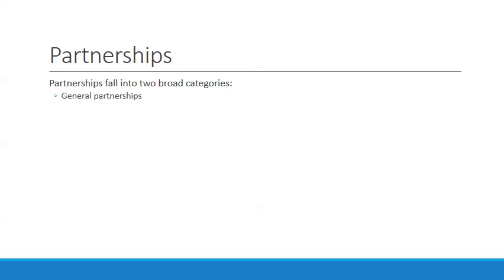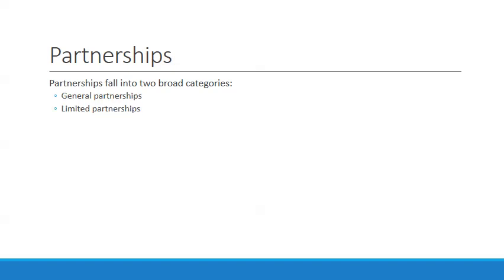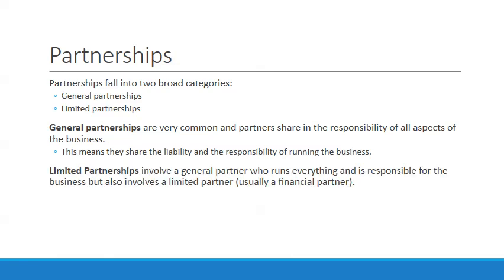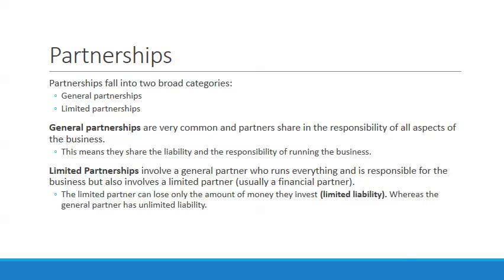Our second business model is a partnership. Partnerships fall into two broad categories: a general partnership and a limited partnership. In a general partnership, partners share responsibility in all aspects of the business, including liability. A limited partnership involves a general partner running everything, plus a limited partner who is usually the financial backer. The limited partner can only lose the amount of money they invest — for example, if they invest $100,000, the most they'll lose is $100,000.